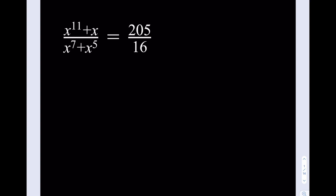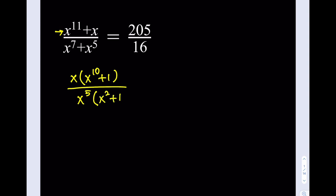What I'm going to do first is start with the numerator. I'll take out an x and write it as x times x to the 10th power plus 1. At the bottom, x to the 5th is a common factor, so I'll take that out and end up with x squared plus 1. And this whole thing is equal to 205 over 16.